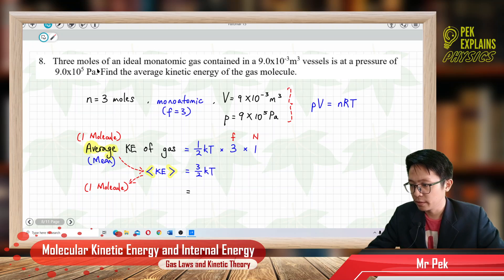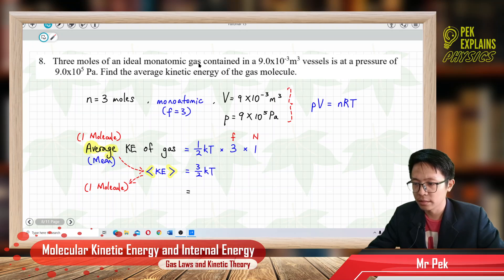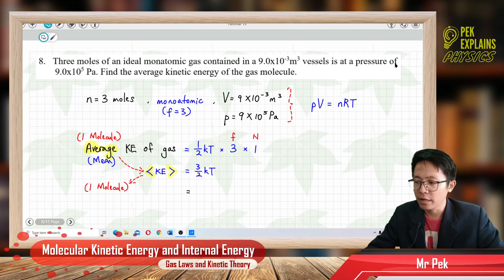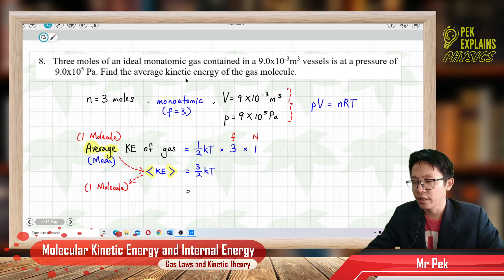Tutorial question 8. 3 moles of an ideal monoatomic gas contained in 9×10⁻³ m³ vessels is at a pressure of 9×10⁵ Pascal. Find the average kinetic energy of the gas molecule.